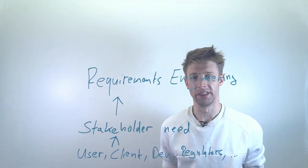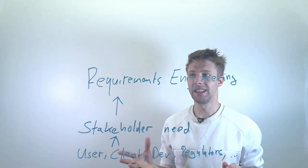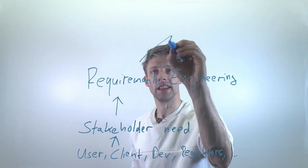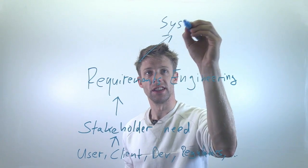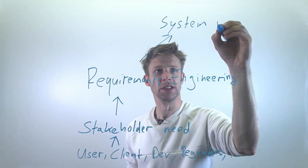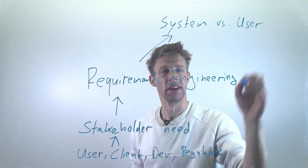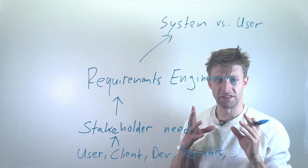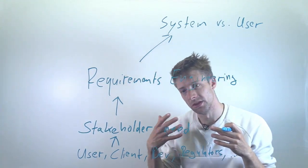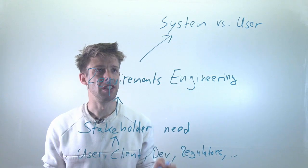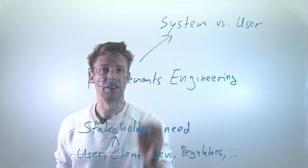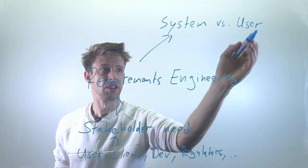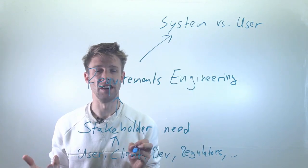This is what a requirement is - a stakeholder need. We typically distinguish between a couple of different requirements. One common distinction that you might see is the system requirement versus the user requirement, and that is simply a matter of perspective. Your user has a very functional perspective - this is what I want to use the system for. But if you want to develop it, you might have to look at it from a different way. For example, if you develop, let's say, a car, the user can tell you what he or she would like to have as a functionality.